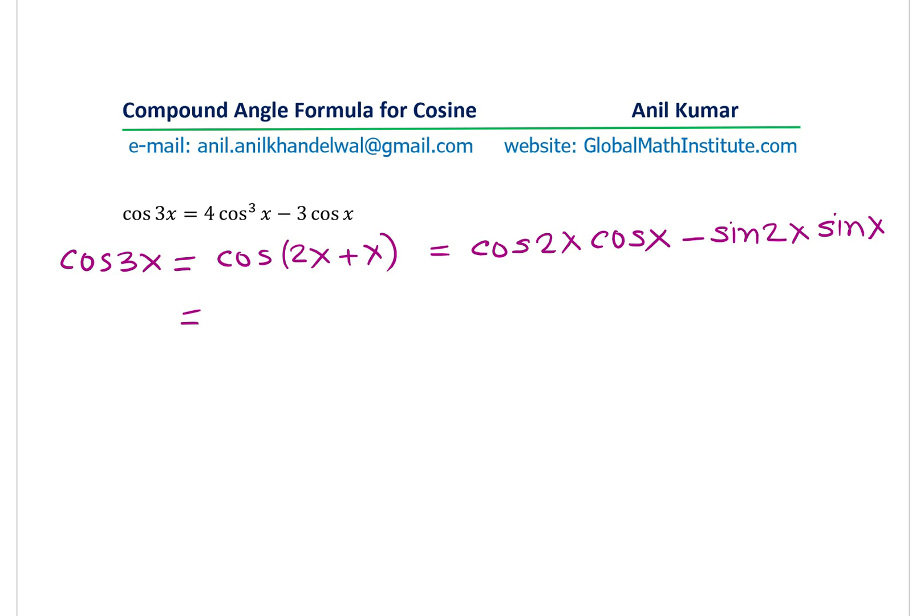Now, using our double angle formulas, cos 2x could be, we want everything in cosine. So, cos 2x can be written as 2 cos² x minus 1. We are going to multiply this by cos x minus sin 2x is actually written as 2 sin x cos x. I have not derived this formula here. You can look into my other videos on this.